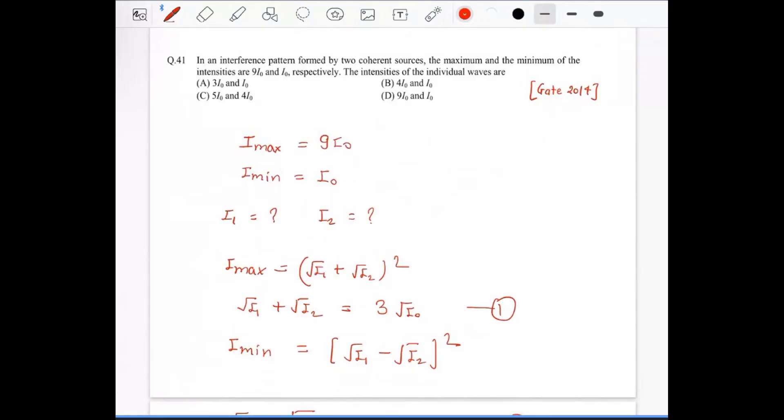An interference pattern combined by two coherent sources - the maximum and minimum intensity are 9 I naught and I naught respectively. The intensity of individual waves - we have to calculate I₁ and I₂. We have the maximum and minimum, I max and I min, so we just put it equals to I max.